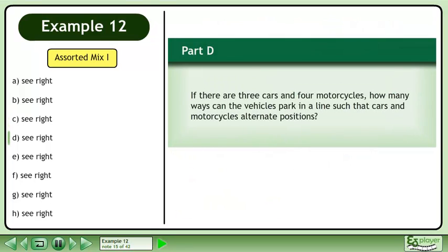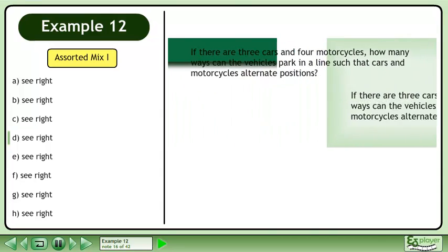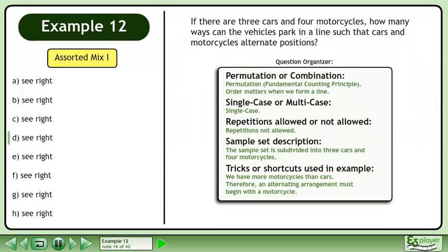Now we'll move on to Part D. If there are three cars and four motorcycles, how many ways can the vehicles park in a line such that the cars and motorcycles alternate positions? Pause the video and organize the information about this question.